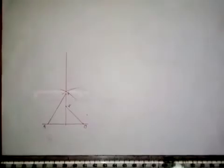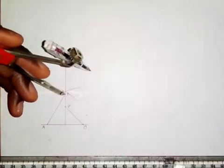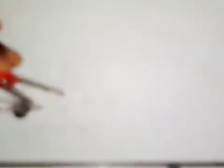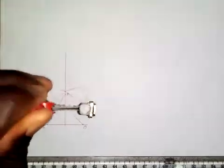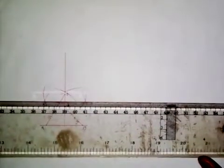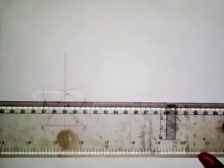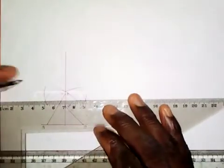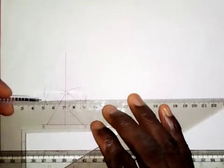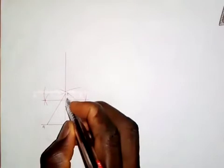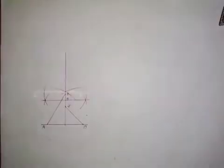To get point 0.5, I need to bisect the distance between point 4 and point 6. With my compass at point 6, I extend it and draw an arc on each side, then put the same radius at point 4 and draw arcs. I join the points of intersection of the arcs together. The midpoint between 4 and 6 is point 0.5.